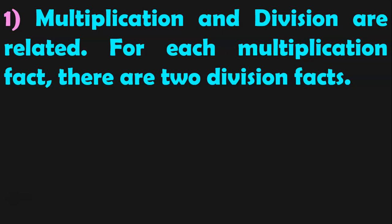The first property is: multiplication and division are related. For each multiplication fact, there are two division facts. To understand the relationship between multiplication and division, please visit my class 3 video which shows the clear relationship with sufficient examples — the link is given in the description box and iCard section. Let us now see this with the help of examples.